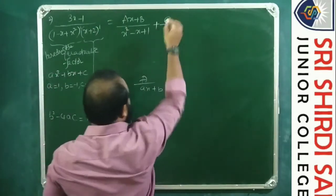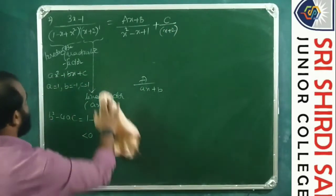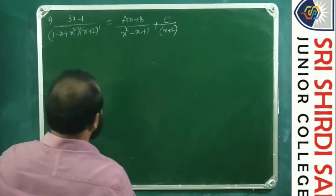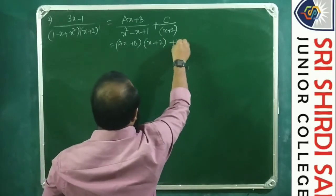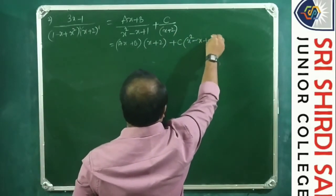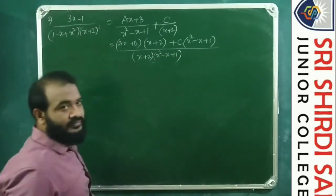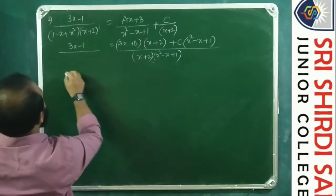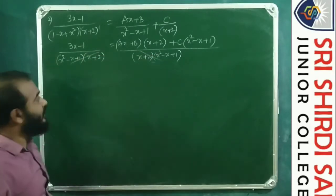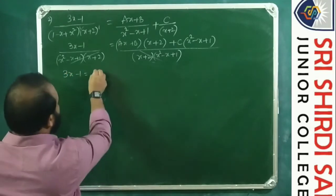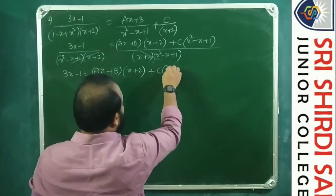Therefore: (x²−3)/[(x+2)(x²+1)] = (1/5)/(x+2) + (4x/5 − 8/5)/(x²+1) = 1/[5(x+2)] + (4x−8)/[5(x²+1)].